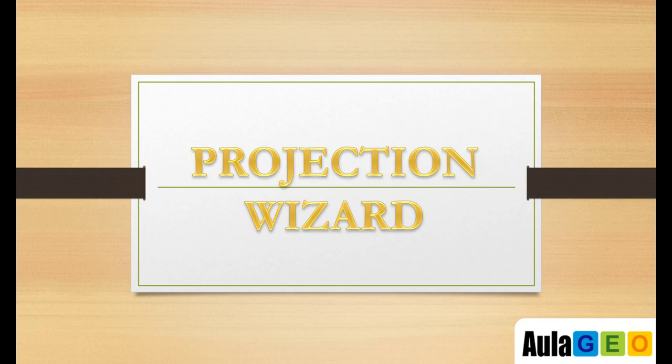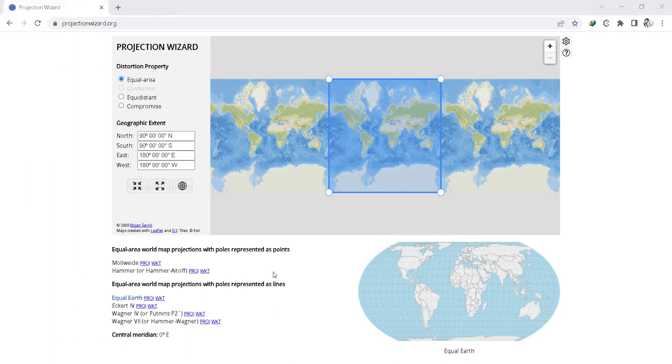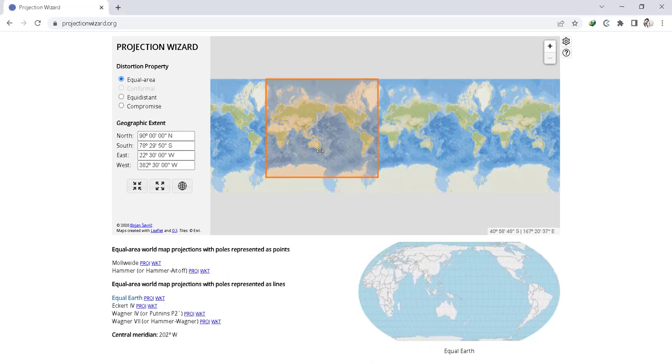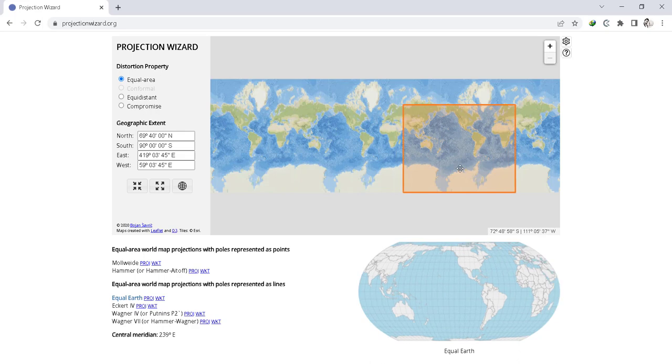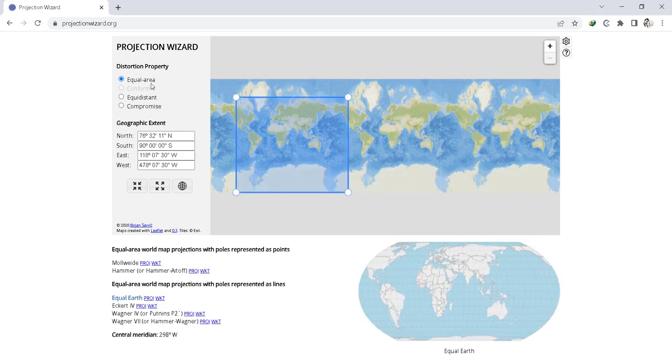The automated selection process is based on John P. Snyder's selection guideline with a few adjustments. For better understanding, let's go to projectionwizard.org and review the tool in real time. I would like you to play with this tool in order to get a better understanding. Here you can see we get these values: north, south, east, west, and we can simply select any part by hovering the cursor using the mouse.